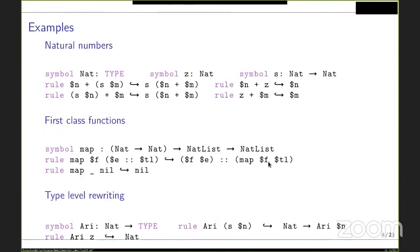Looking at features of DEDUCTIE: we can declare natural numbers with constructors zero and successor, and define reduction rules where variables are preceded by a dollar sigil. Overlapping rules are permitted. Functions are first-class citizens — for example, the map function takes a function as its first argument and applies it to each element of a list. We can also rewrite at the type level, such as the array function that takes a natural number and rewrites to the type of a function taking n numbers and returning a natural number.